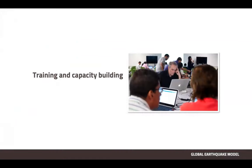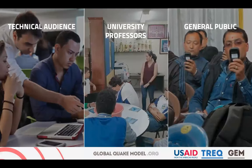We will share more about the training and capacity building component. In the project, we divided this component into three main groups: one was the technical audience, the second one was university professors or academia in particular, and the third one was the general public.